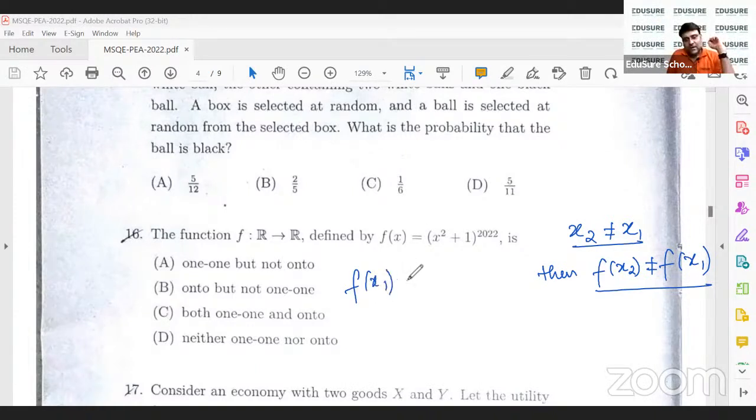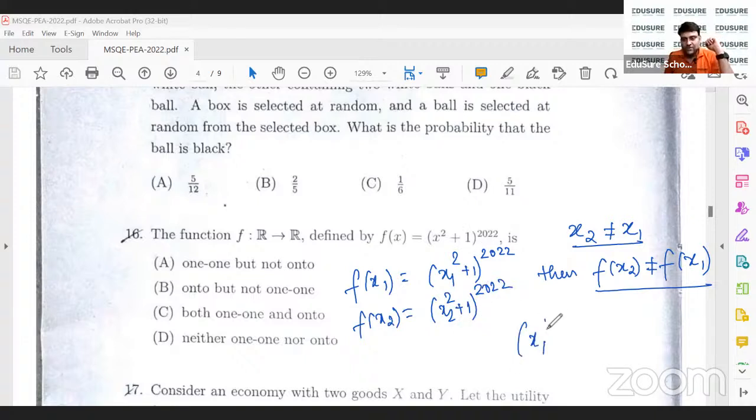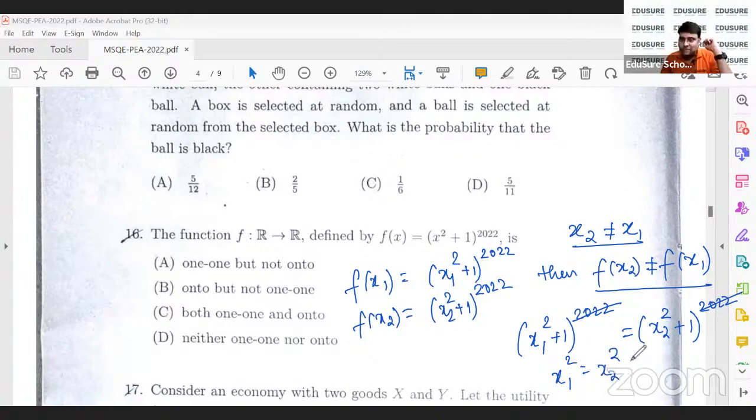Here, let's take what is fx1. fx1 is basically x1 square plus 1 to the power 2022. fx2 will be nothing but x2 square plus 1 to the power 2022. Can both of them be equal? x1 square plus 1 to the power 2022 equal to x2 square plus 1 to the power 2022? This goes. Both of them have to be positive. So x1 square is equal to x2 square. That means x1 can be equal to plus minus x2.